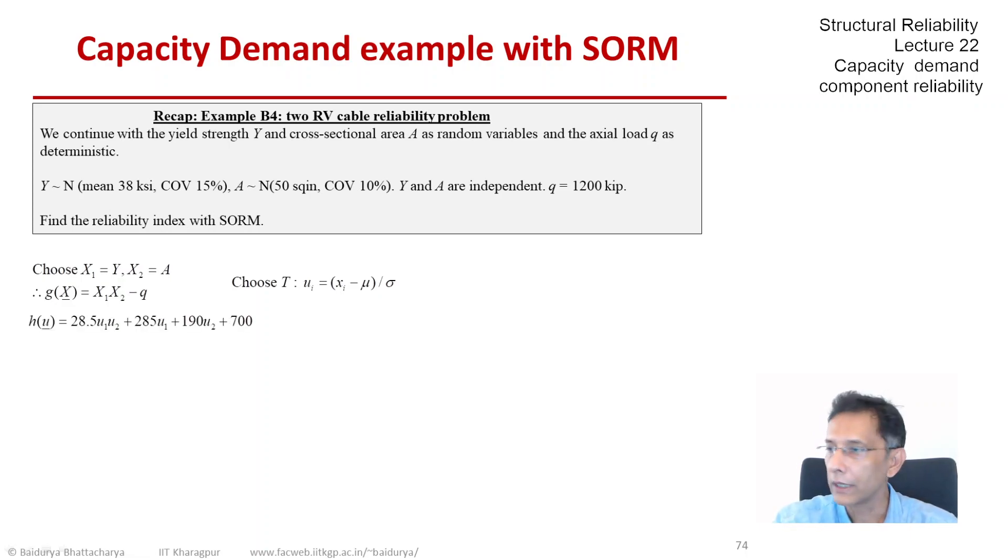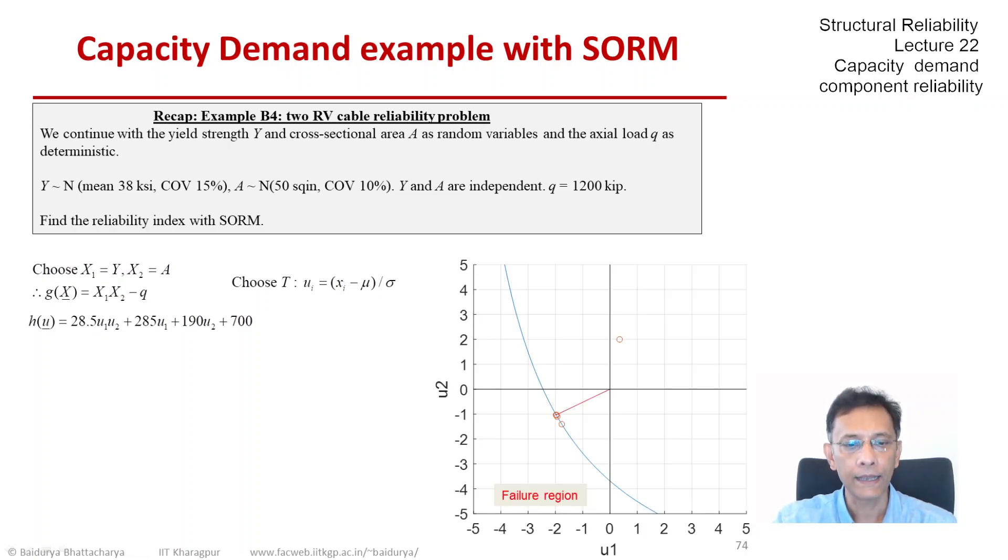So this gives us a limit state equation. H is a limit state function in the independent standard normal space U. And this is what the limit state looks like pictorially. So we have U1 and U2 and the blue curve is the limit state. The origin is in the safe set and the failure region is towards the lower left.